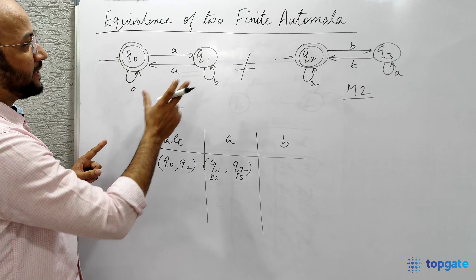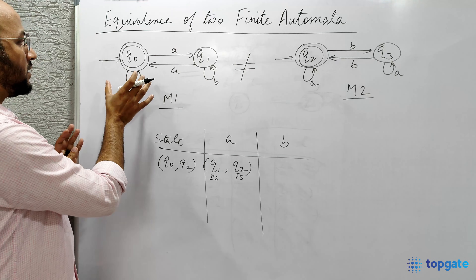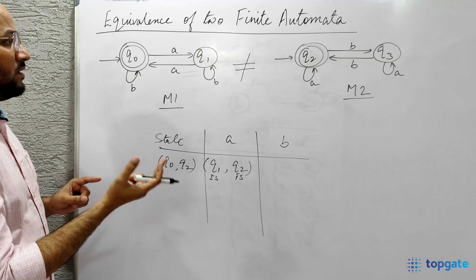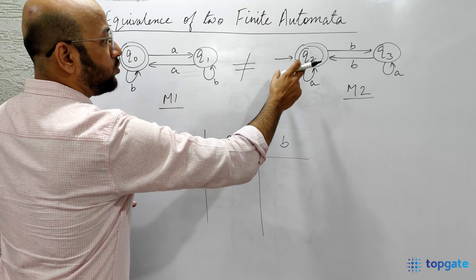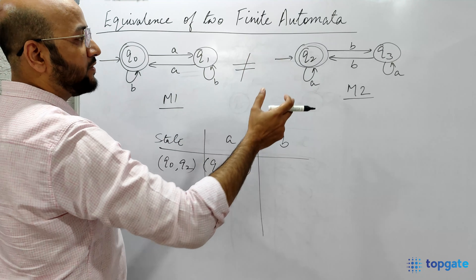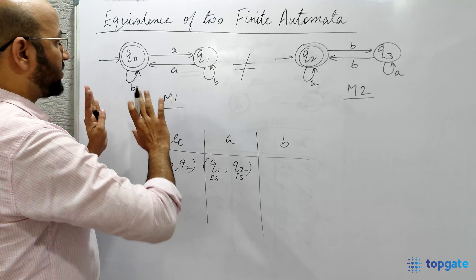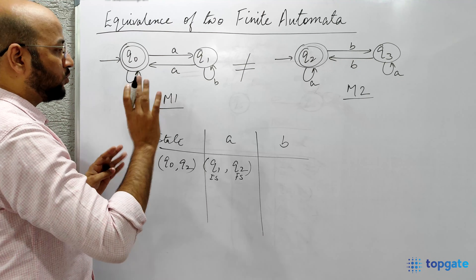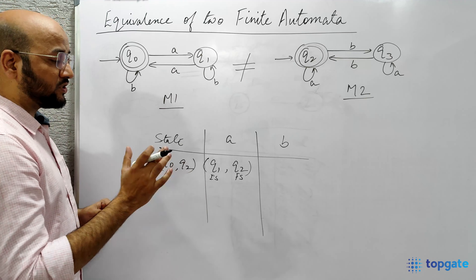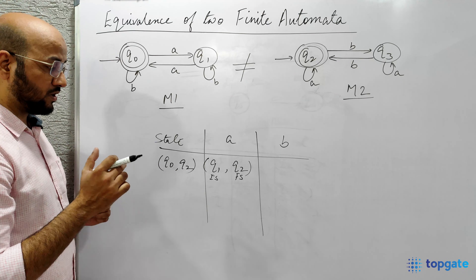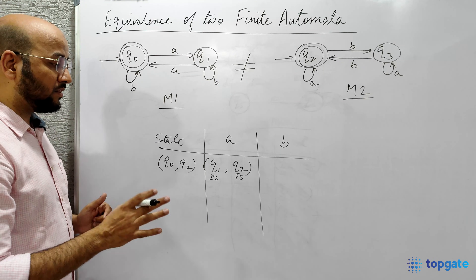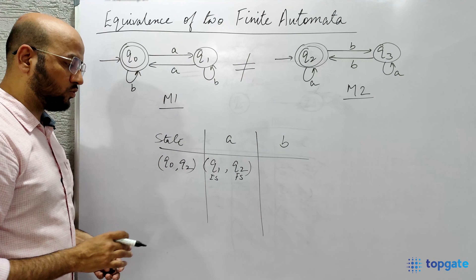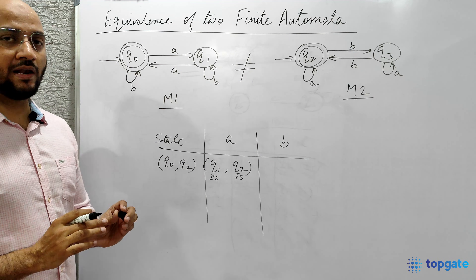The second step is fulfilled — in M1, Q0 is both the initial and final state, and in M2, Q2 is also both the initial and final state. However, since we reached a pair where one state is non-final and one is final, we still conclude that both machines are not equivalent.